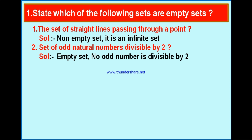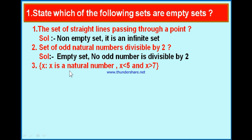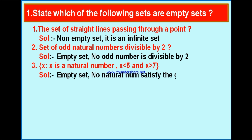Bit 3: x such that x is a natural number, x is less than 5 and greater than 7. The condition requires a number to satisfy both conditions simultaneously — less than 5 and greater than 7. For example, 4 is less than 5 but not greater than 7; 8 is greater than 7 but not less than 5. You cannot find any such number, therefore it is an empty set.